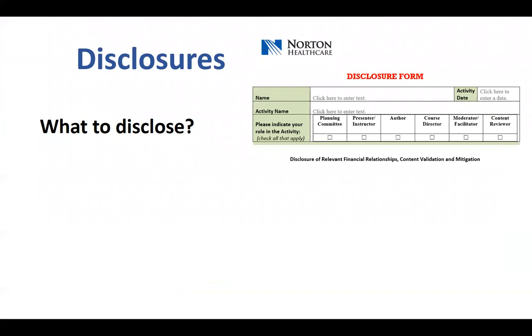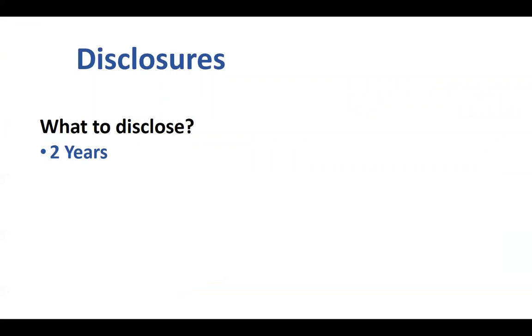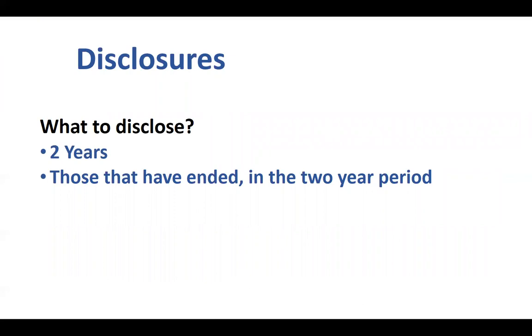This is essentially what a disclosure form will look like, and we provide this to you. It is also available as a resource. Individuals need to disclose anything within the last two years. If they did a one-time activity or speaking engagement and are no longer doing it, they still need to disclose it, and the form has an area where they can indicate it has ended.